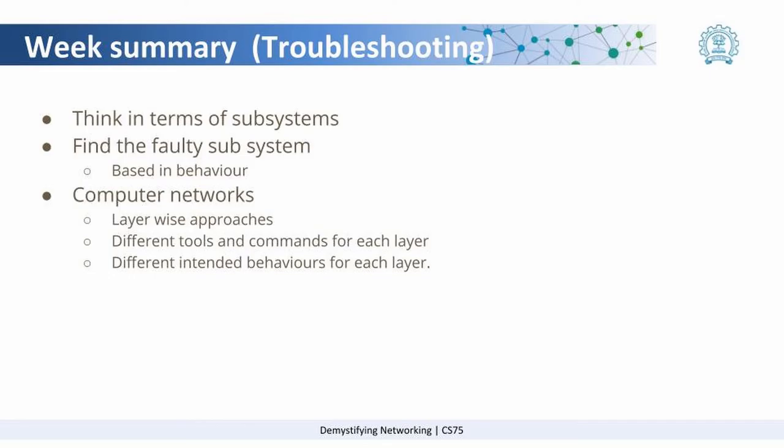With respect to computer networks, we found that a preferred way to troubleshoot is to consider each layer of the network — that is, the physical layer, link layer, network layer, and the application layer. We saw that there are different tools or commands available for each of these layers to troubleshoot, and there are particular things about these layers that we need to focus on.